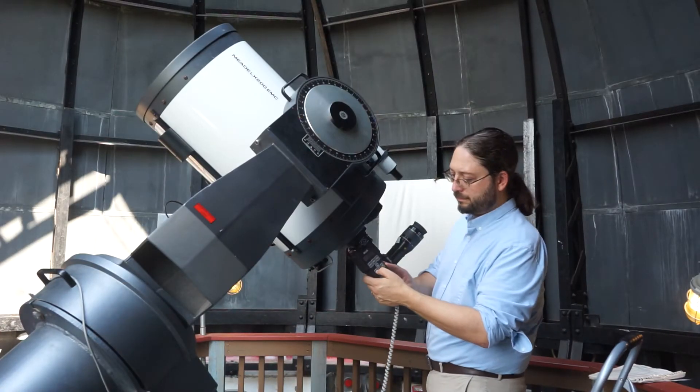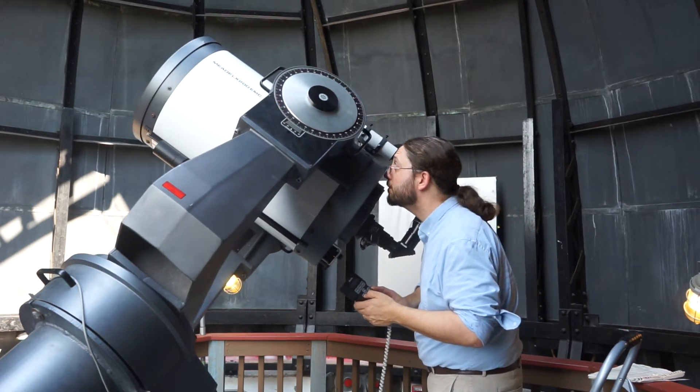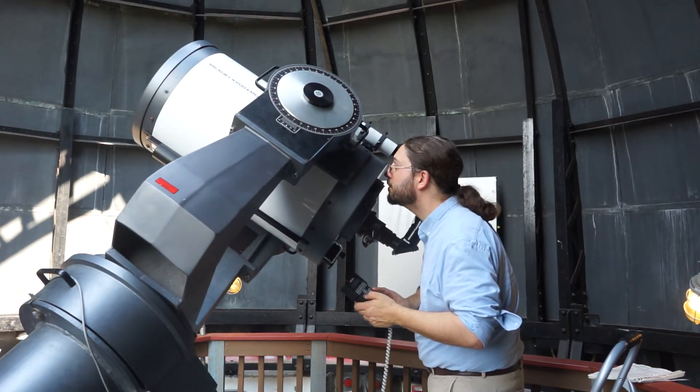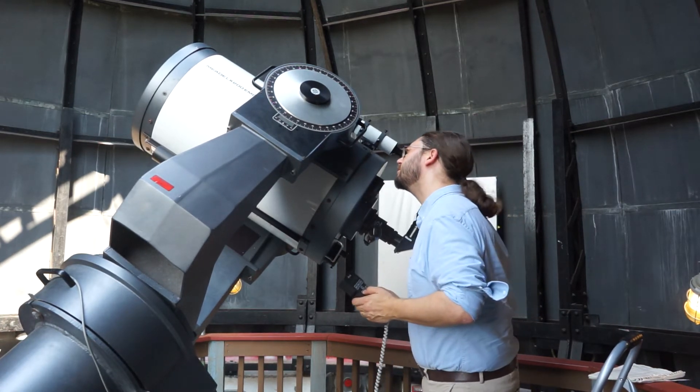Use the north-south-east-west buttons on the handbox to point the telescope roughly in the direction of the star, and then sight along the tube for course alignment. Keep moving the telescope until you can see the star in the finder scope.